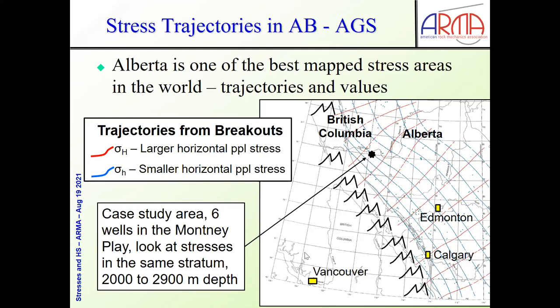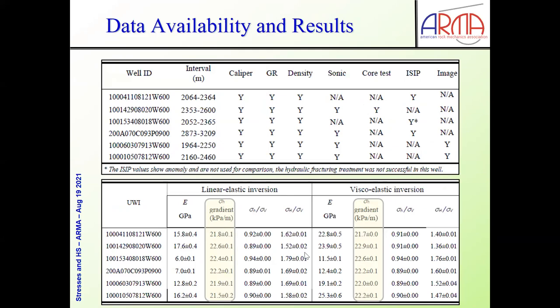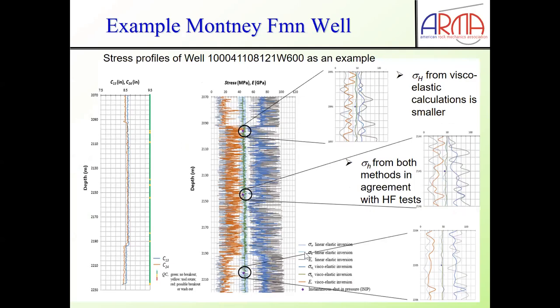You can see those little red lines and blue lines — those are the trajectories of the larger horizontal and smaller horizontal principal stresses, coming from previous work from the Alberta Geological Survey. In this case, we were provided with six wells where we had good caliper data, 2000 to 2900 meters deep in the Montney plate. We're not in a normal fault regime anymore — we're in a strike-slip regime. Look at those values of horizontal stresses relative to the vertical stress. It's a very strongly thrust fault regime. Sigma-H-min in some cases is quite close to 0.9 or 0.92 of the vertical stress. So we're in a strike-slip regime, but close to the thrust regime.